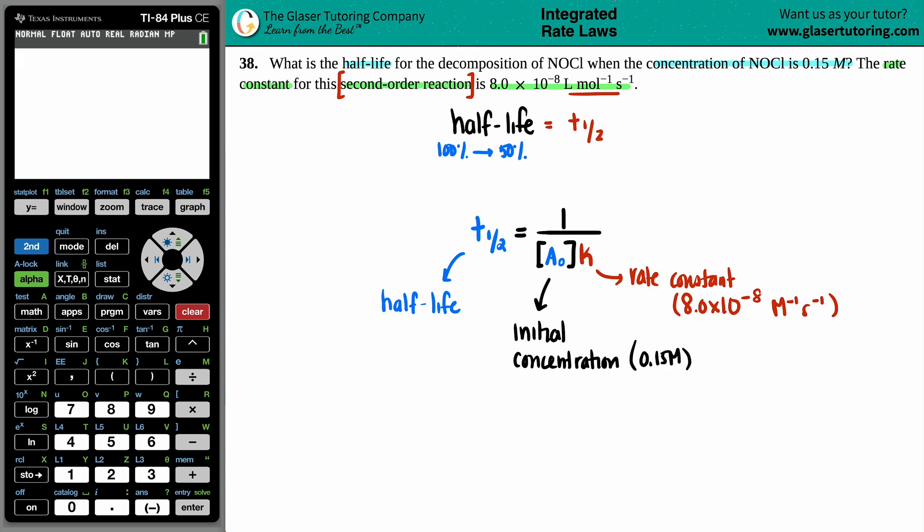So now let's plug in our values. T half equals one divided by the initial concentration, 0.15 times 8.0 times 10 to the negative eighth. Let's close that up and make this a little bit nicer.